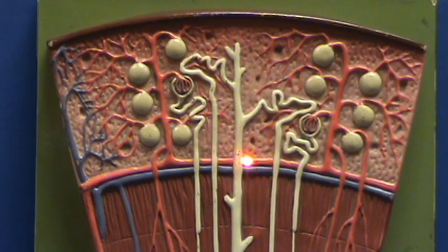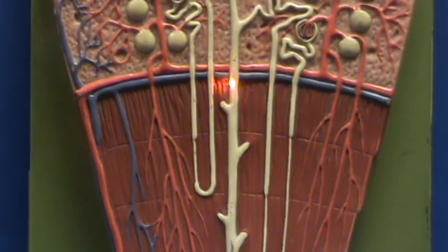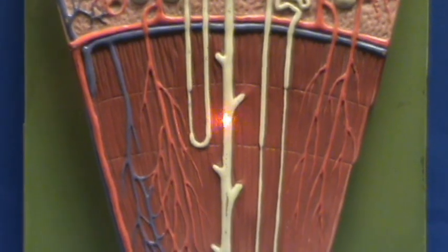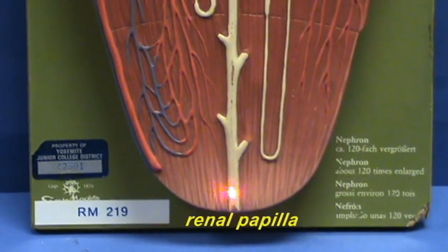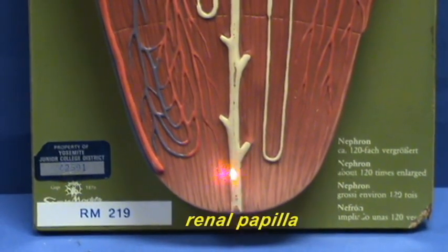This collecting duct is going to descend into the pyramid. It's going to fuse with other neighboring collecting ducts and eventually get to the renal papilla, where it's going to be called the papillary duct.